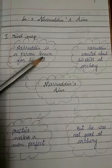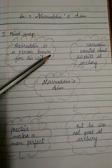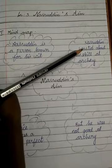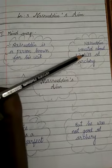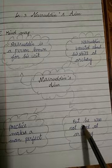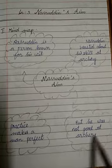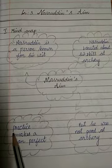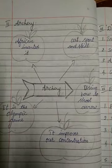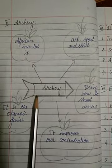Nasruddin's Aim. Nasruddin is a person known for his wit. Nasruddin boasted about his skill at archery, but he was not good at archery. Practice makes a man perfect. This is your subtopic: mind map — archery.